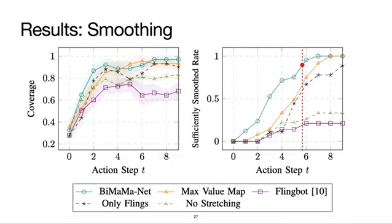We compare the performance of BiMamaNet with the following baselines: the max value map, a variant that computes the peak points directly without the correspondence descriptors; only flings, a variant restricted to fling actions only; and the pre-trained weights from the flingbot paper. Our experiments show that BiMamaNet can increase the coverage of a known t-shirt in 5-6 smoothing actions, faster than baselines in prior works.